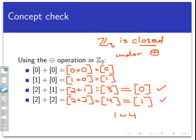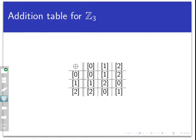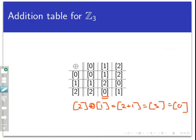Since there are only three elements in ℤ₃, we can compile all possible ⊕ addition problems into a table. The entry in the third row, second column, for example, gives 2 ⊕ 1. Since regular integer addition is commutative, ⊕ addition is commutative too, so 2 ⊕ 1 = 1 ⊕ 2. This system of addition works for any ℤₙ, not just ℤ₃.